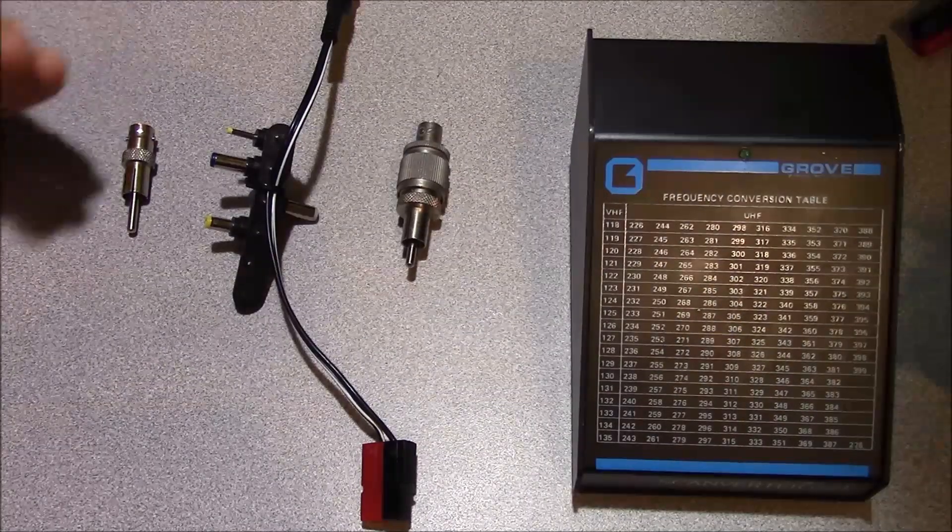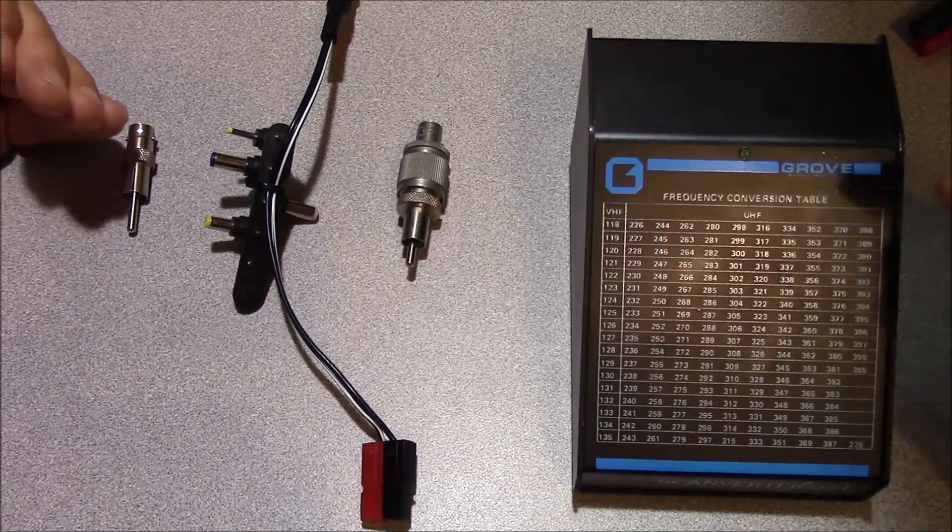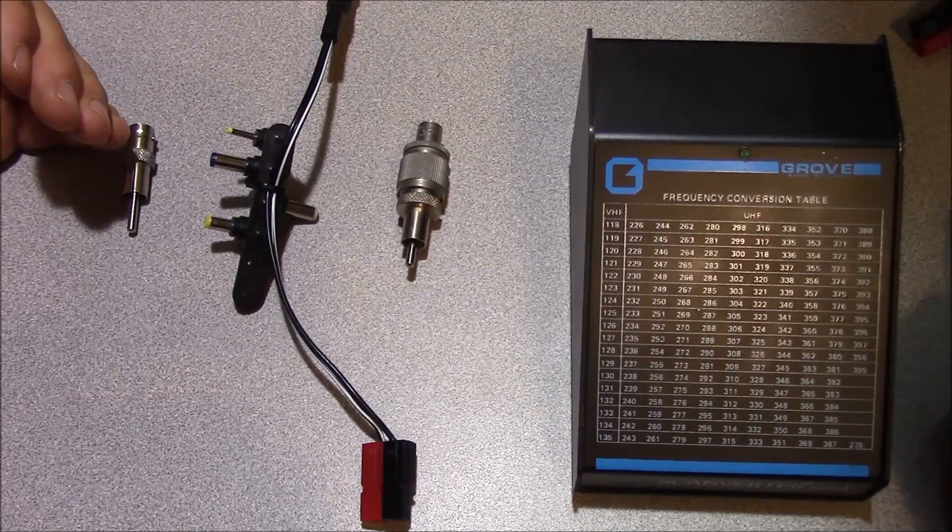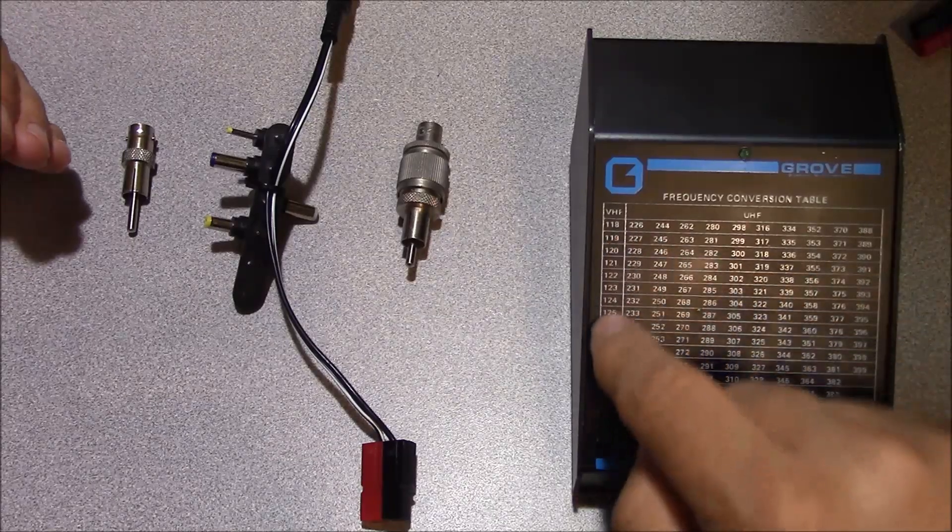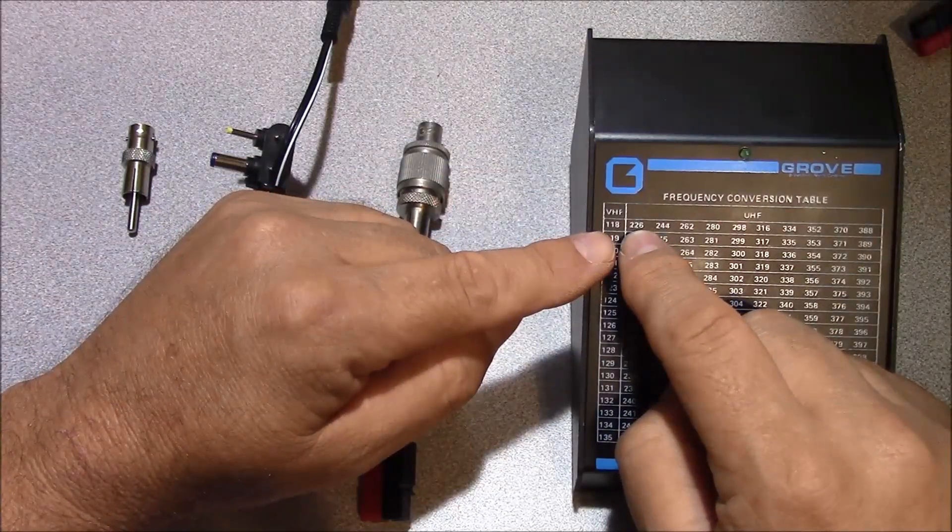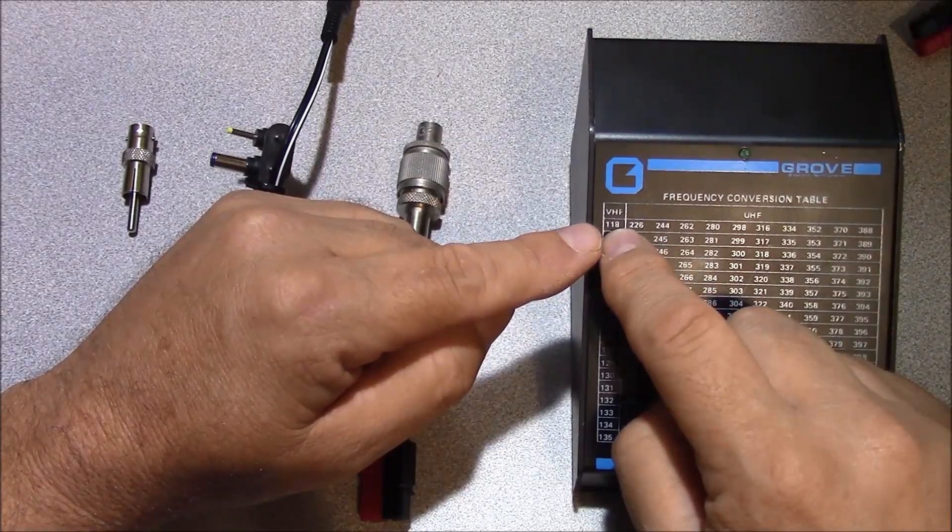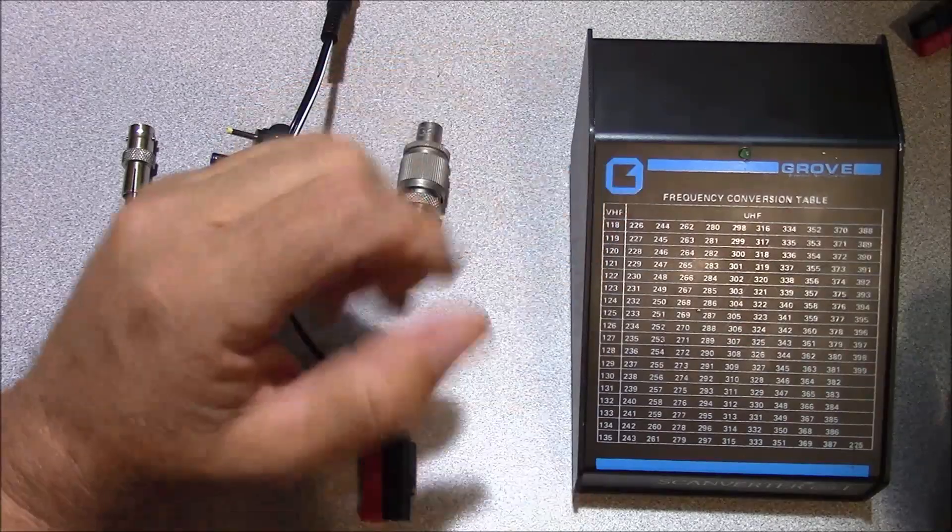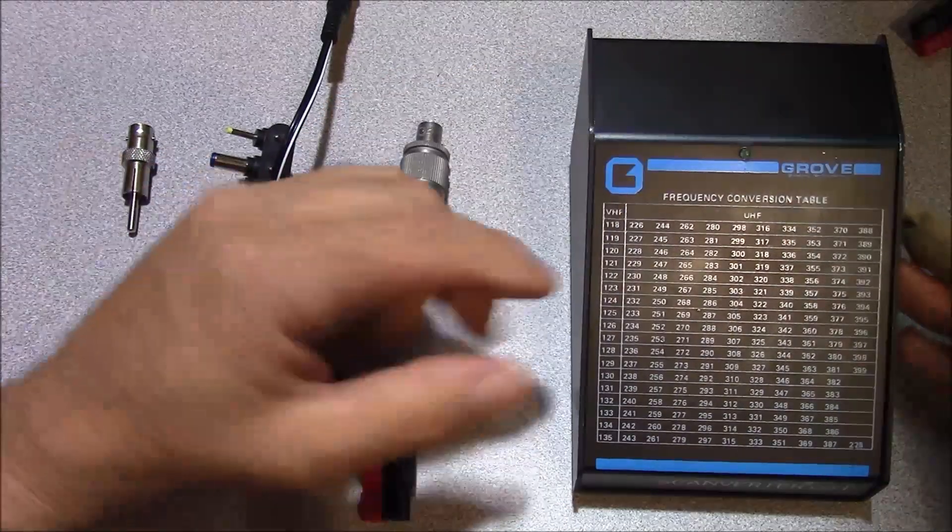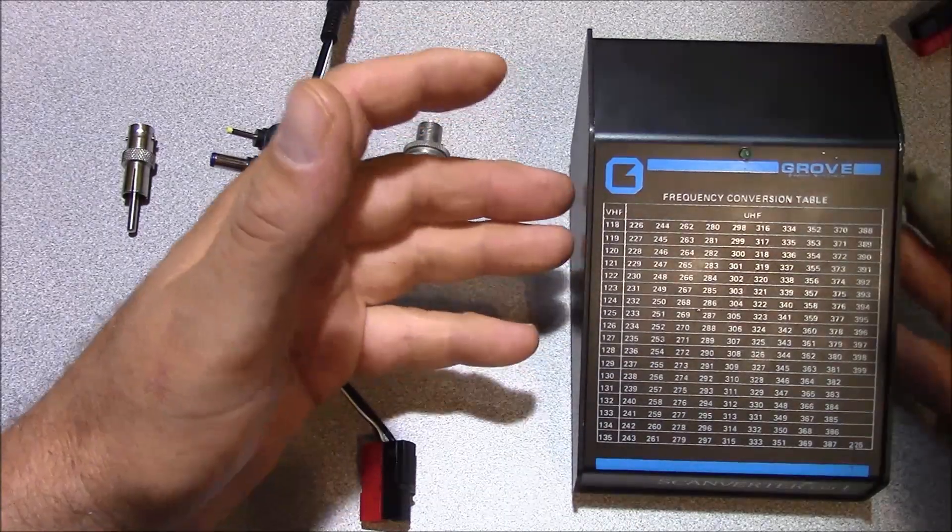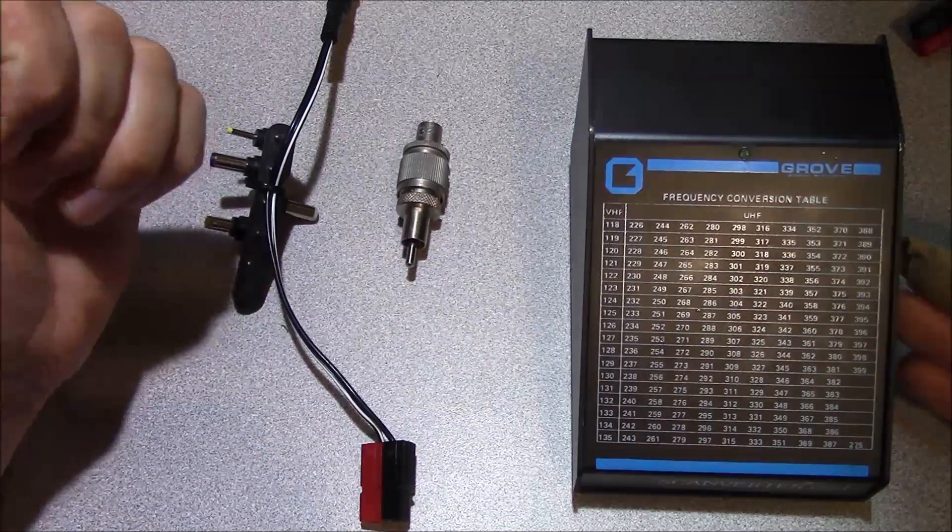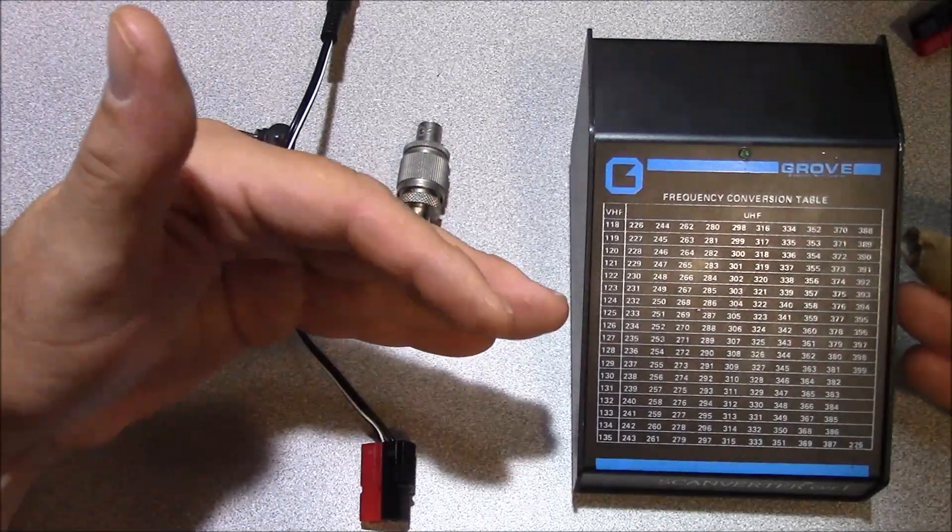We're going to go ahead and test the device now. What we're going to do is, using my service monitor, we're going to feed a UHF signal into the device and then use a VHF receiver and tune to the frequency over here. For example, we'll start with 226. We'll feed 226 MHz RF out of the service monitor, and the receiver will be tuned to 118. And we'll see how the receive performance is on this device compared to just the radio itself receiving these UHF frequencies without the benefit of utilizing this. In order to do this, we're going to use a more modern scanning receiver that actually has mill air coverage. That will give us an idea of how efficiently this device is working.